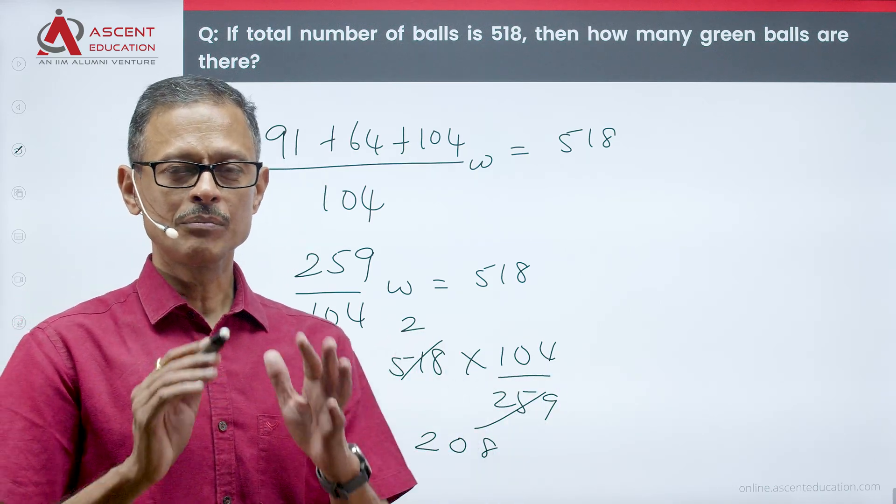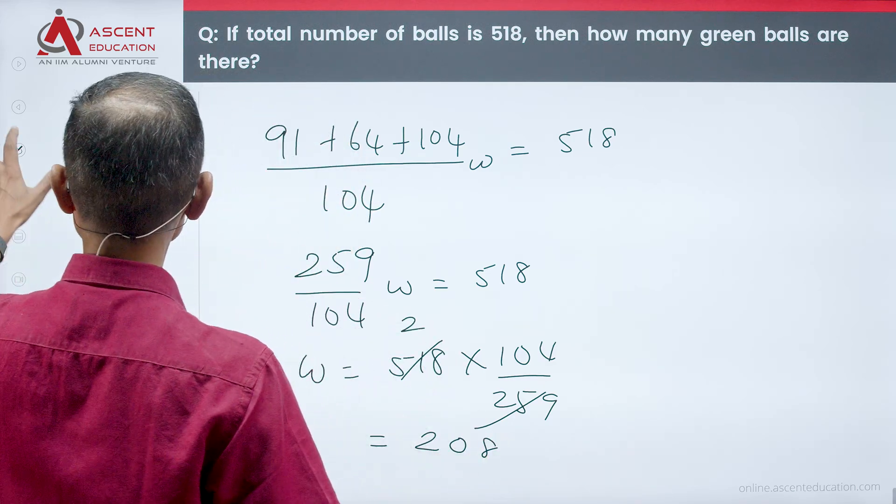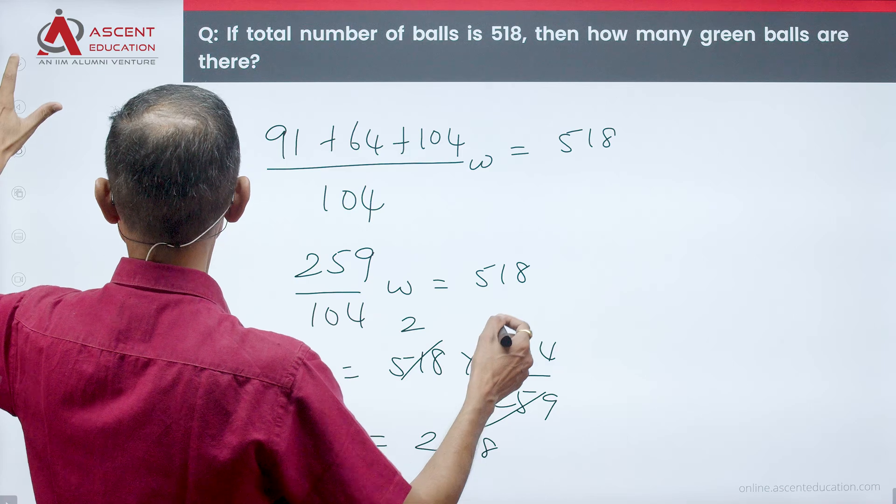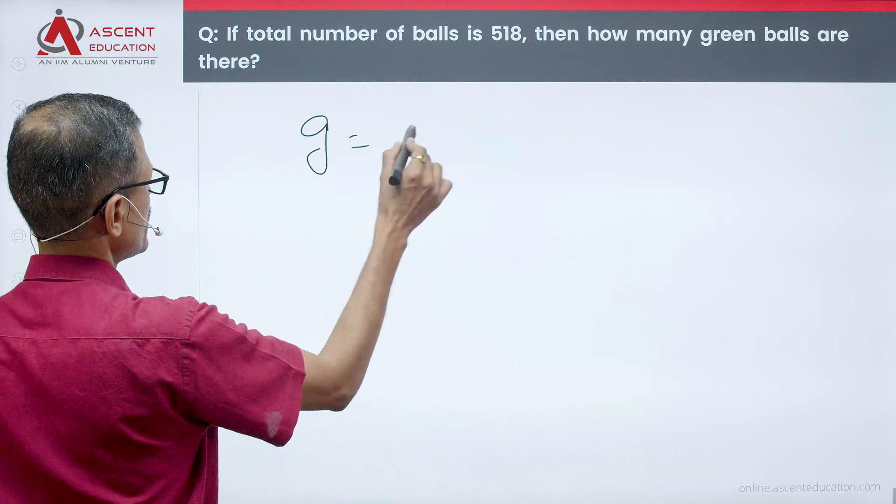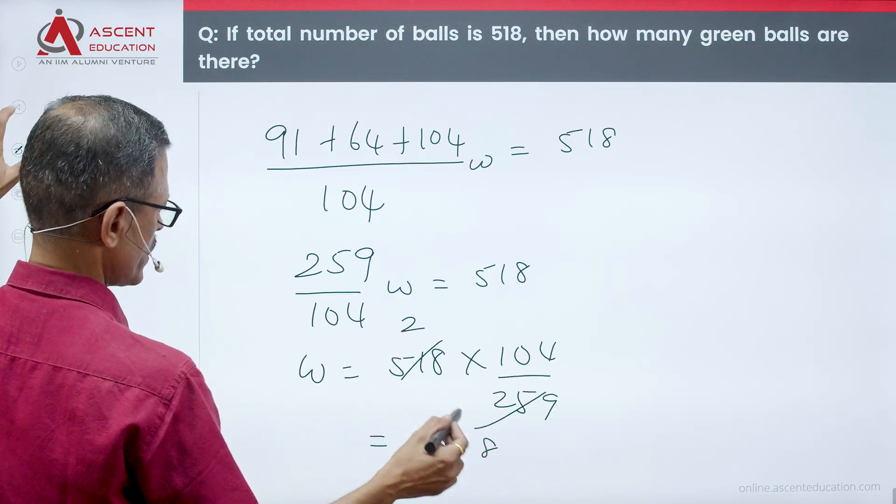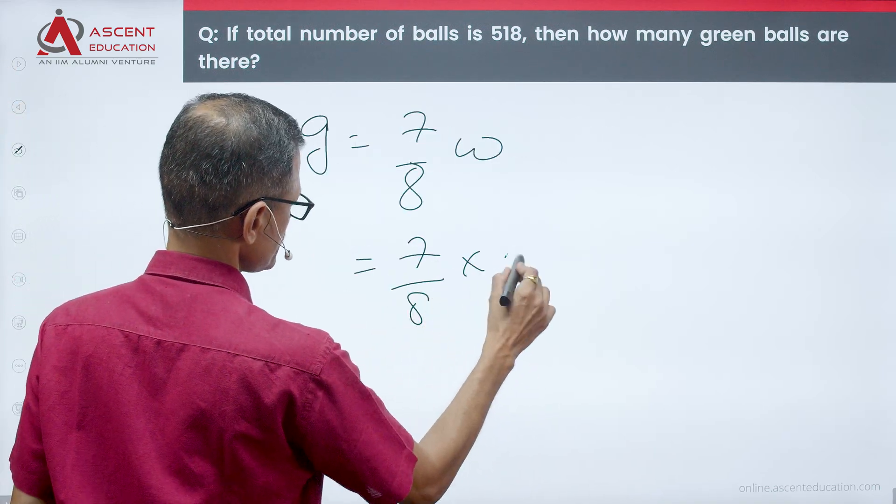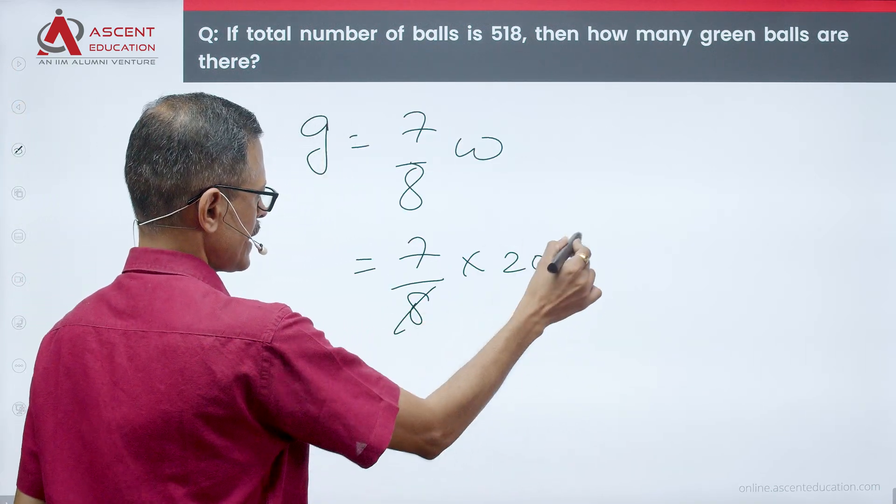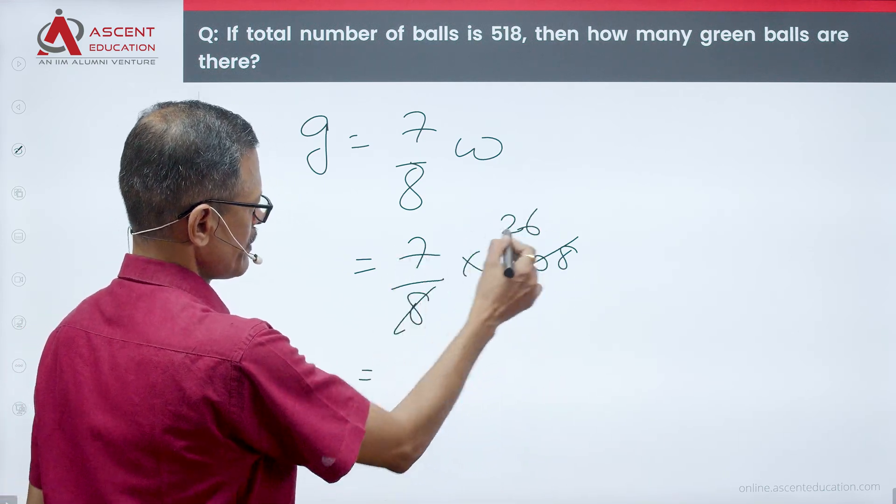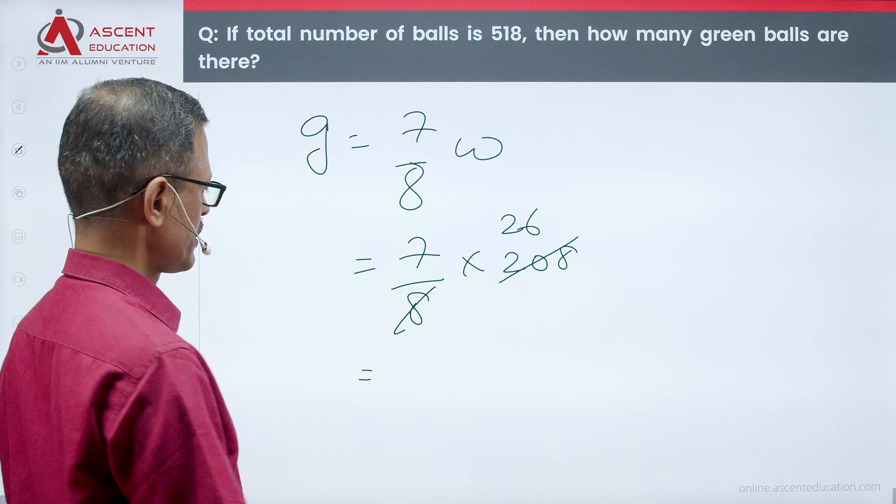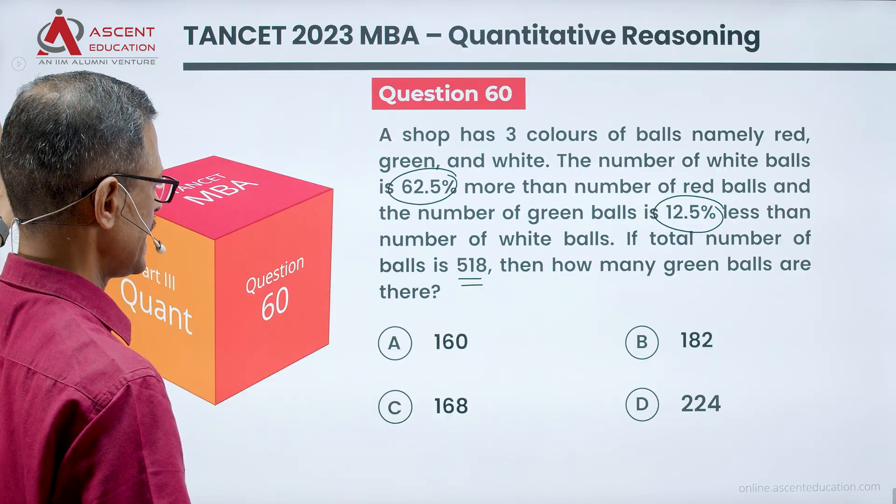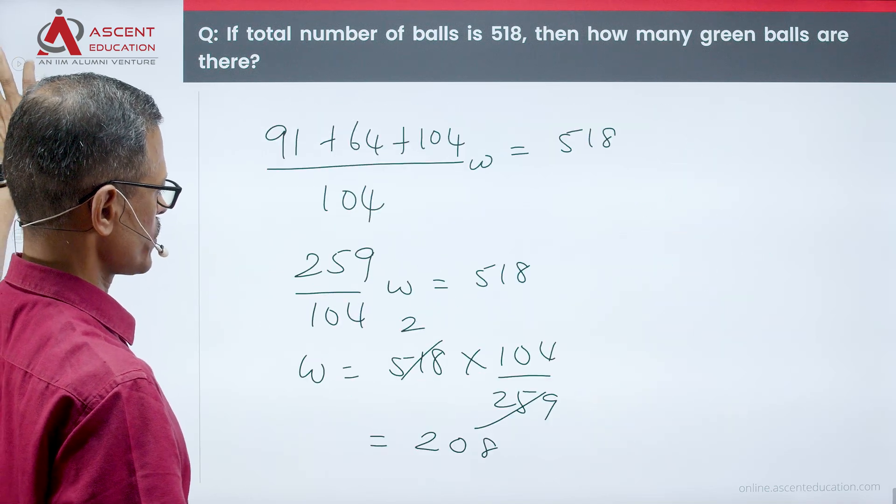Number of white balls, number of green balls. What number is green? G is equal to 7 8th of W. Green is equal to 7 8th of W. W is equal to 208. If we divide it, 25 eighths are 200, so this will be 26. 7 into 25 is 175 plus 7, which is equal to 182. How many green balls are there? Number of green balls is equal to 182. Choice B is the correct answer to this question.